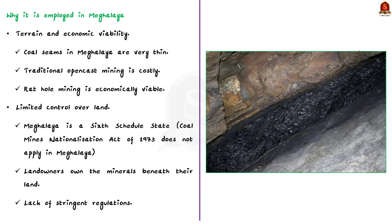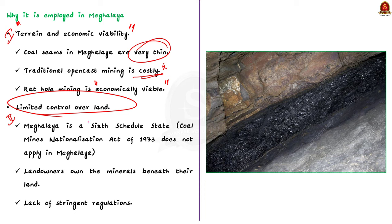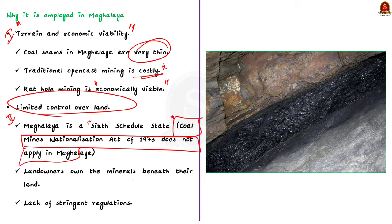The first reason is terrain and economic viability. The coal seams in Meghalaya are very thin, making traditional open-cast mining less economically feasible. Rat hole mining was considered more viable because it was believed to be more cost-effective for extracting coal from this region. The second reason is limited control over the land. Meghalaya is a Sixth Schedule state where the Coal Mines Nationalisation Act of 1973 does not apply. Landowners in Meghalaya also own the minerals beneath their lands, resulting in limited governmental control over mining activity. This lack of stringent regulation led to the prevalence of unregulated mining.